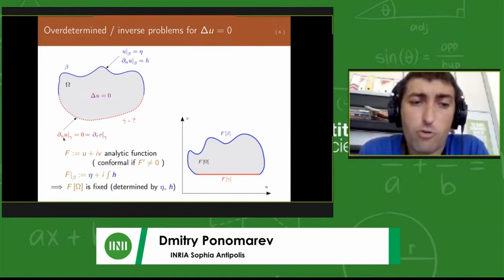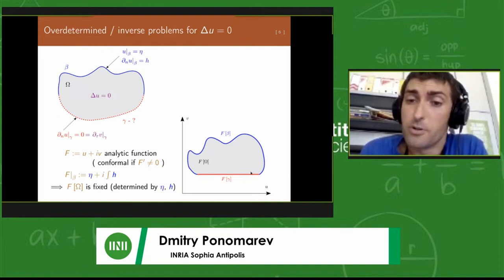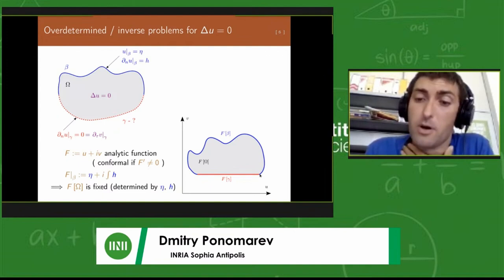If we look at the known part of the boundary, from the Cauchy-Riemann condition the normal derivative is related to the tangential derivative of the harmonic conjugate function. That means that in the domain u and v, this will be just a horizontal line. If we look at the inverse map, which would also be analytic, we have a problem with fixed geometry but with data available on this blue part.